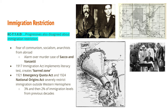Immigration was another issue that progressives were split on. Some progressives believed in racial theories like social Darwinism and a hierarchy of races, arguing some groups should not be admitted to the United States. Others said immigration should be allowed without many restrictions. During the 1920s, there was growing fear of communism, socialism, and anarchists from abroad. This was heightened by the murder cases of Sacco and Vanzetti — Italian immigrant anarchists who were executed without certainty of their guilt. This hysteria led to legislation that severely restricted immigration.